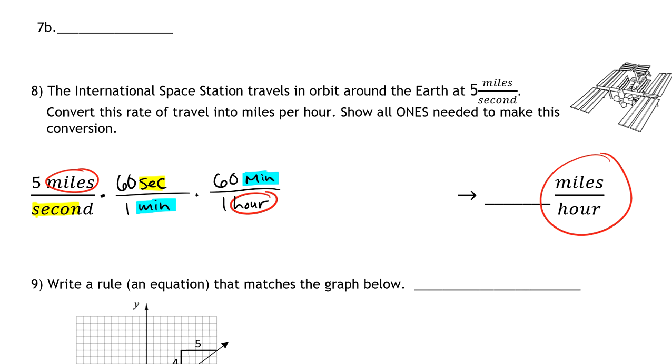All I need to do is multiply 5 times 60 times 60. I've got a 1 in the denominator. So when I multiply 5 times 60 times 60, I end up getting 18,000.